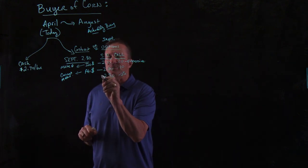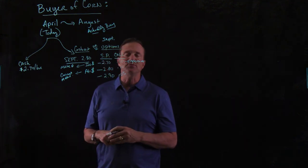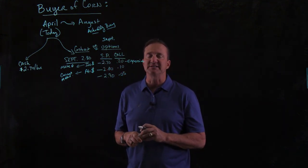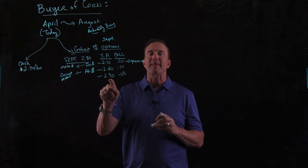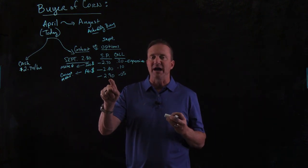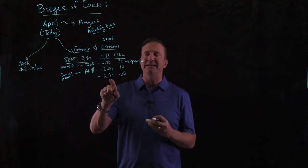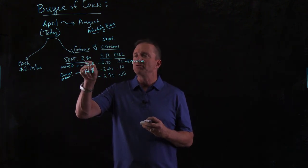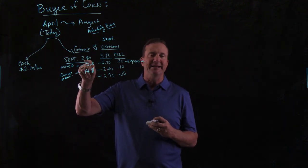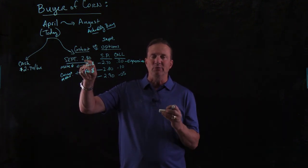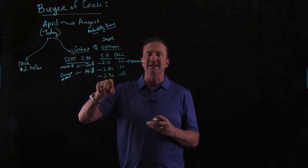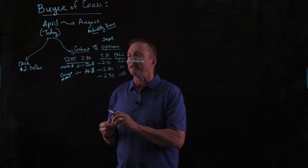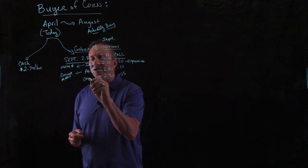All right, let's keep going. The last one is $2.90. Remember, it's the right to buy at $2.90. What could you immediately sell it for? $2.80. That loses you money. No one would do that. You buy this at $2.90, and that is called out of the money.